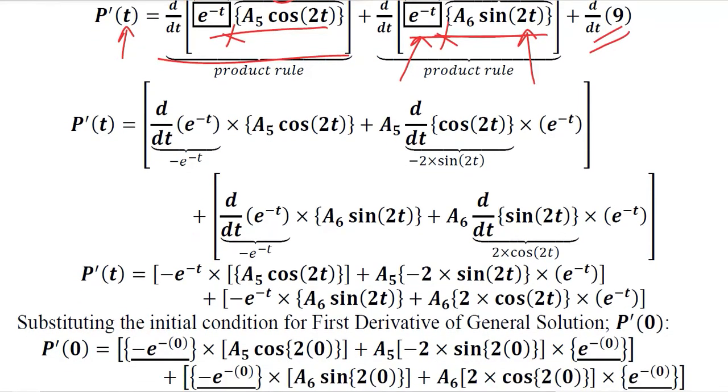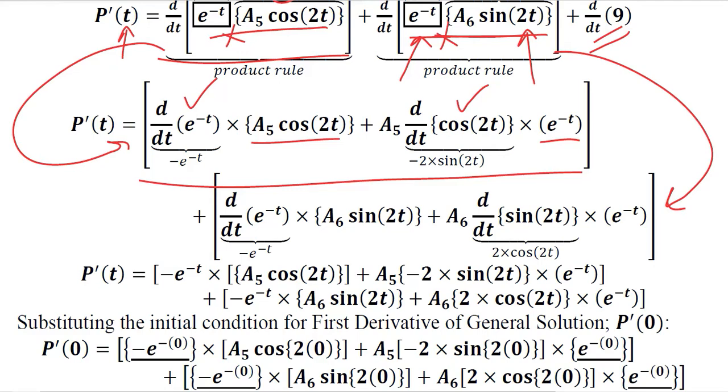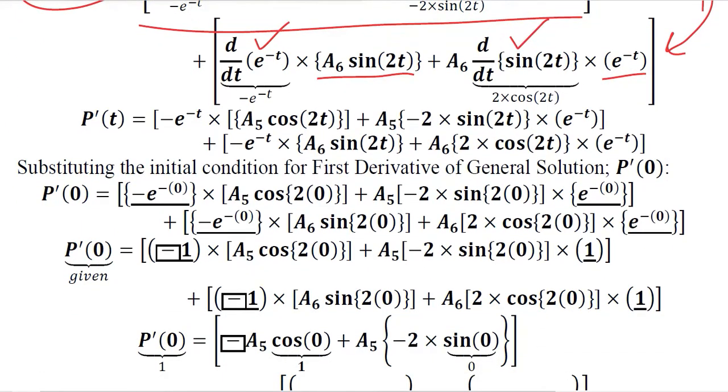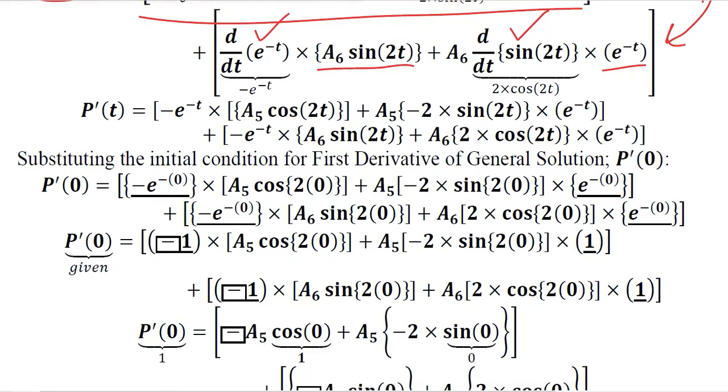So we take the product of these. Product rule will be applied. So the first product rule will be here, this is the first product rule. The derivative of the first term, the other term as it is. The derivative of the second term and the first term as it is. And then this term is expanded. This was the first one, and now we are talking about this one. The derivative of the first term, the second one as it is. The derivative of the second term, the first one as it is. Now this is the process of simplification that you have been doing since your school.